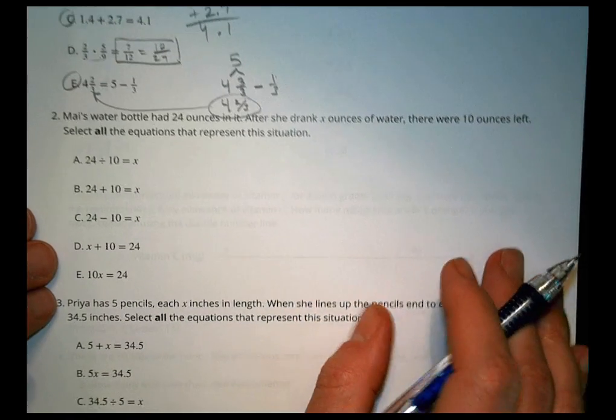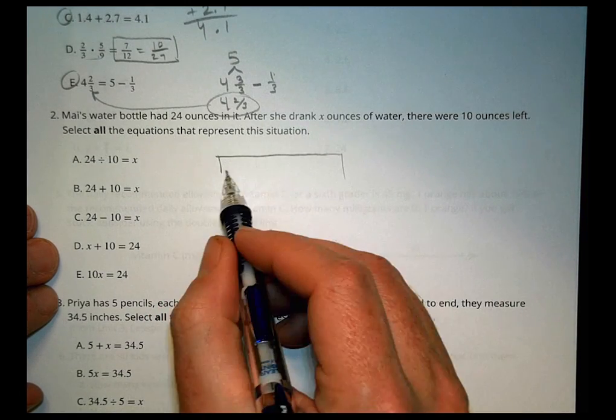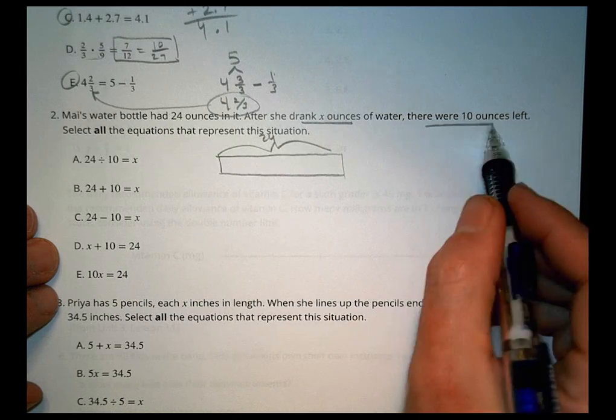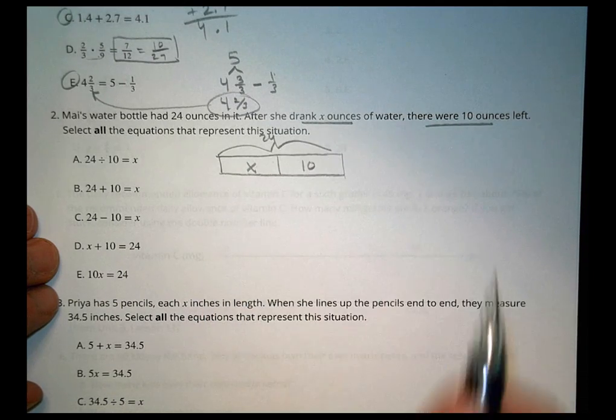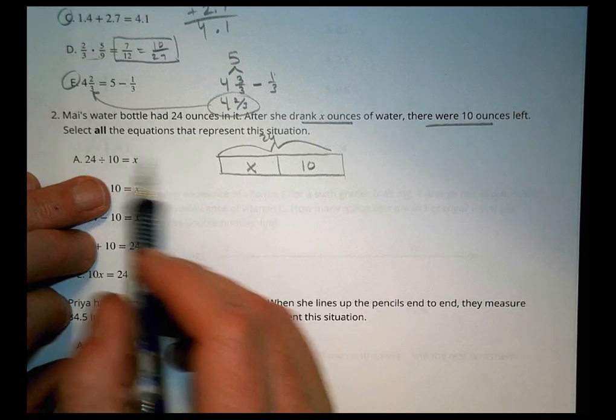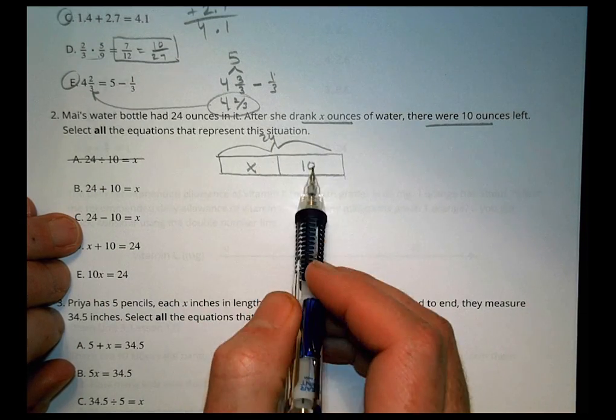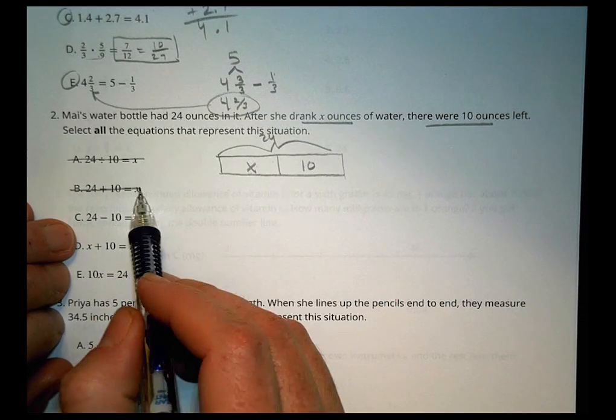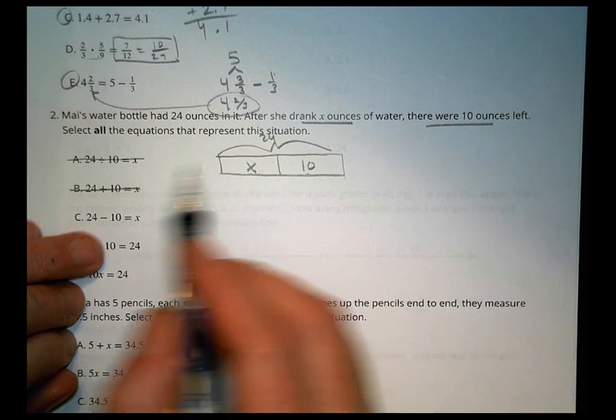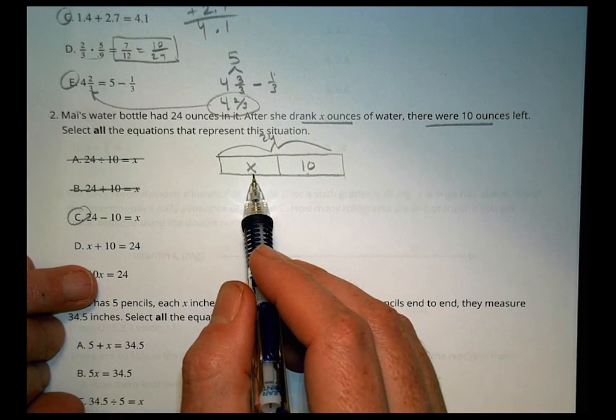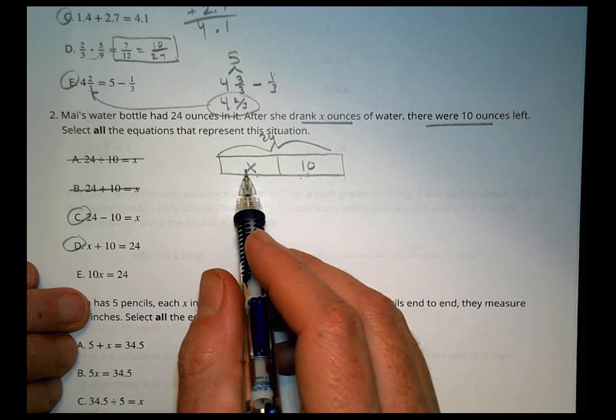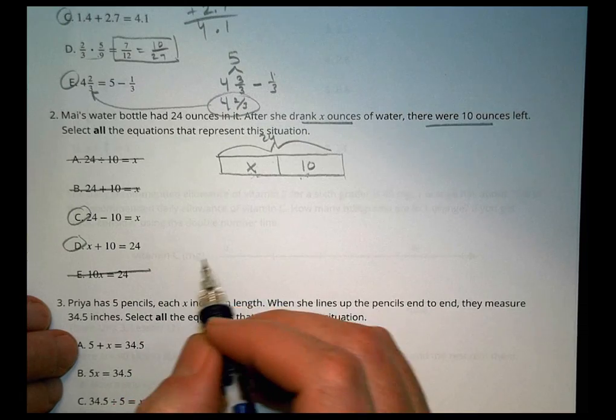Number 2. May's water bottle had 24 ounces in it. So here it had 24 ounces in it. Whole thing 24. After she drank x ounces, there were 10 ounces left. So she drank x and had 10 left. Select all the equations that represent the situation. Well, are we taking 24 and putting it in 10 groups? Nope. Not dividing it by 10. Are we adding the whole thing in one part to find out the little piece? That doesn't make sense. Are we doing the whole thing minus what was left to find out what she drank? We certainly could. That would work. How about this? Are we doing what she drank plus what's left to get 24? That would work. x plus 10 equals 24. Are we multiplying x by 10 groups? Nope. I don't have 10 groups of x. So it's just C and D.